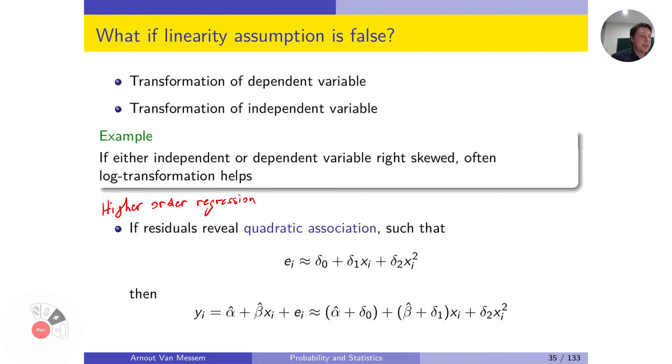It means that the residuals are a function of x squared. Because my outcome, my dependent variable, is my model f of x plus my error term, this quadratic term is also transmitted to the outcomes. So it means that my y is actually a function of x squared and not of x.